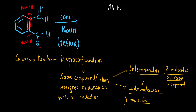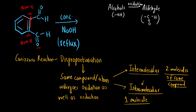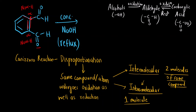Before proceeding, we must know that alcohols when oxidized first form aldehydes (C=O), and aldehydes are further oxidized to form carboxylic acids (C(=O)OH). Going in reverse, if we reduce carboxylic acid we get aldehyde first, and if we further reduce the aldehyde we get alcohol.